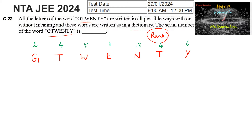Now let us start from the left side. Below G, we write less than 2. To the right side of these numbers, how many numbers are there? We need to count — there is only one number, so we write 1. Also, to the right side of this letter G, there are two letters which are repeating — T is repeated two times.